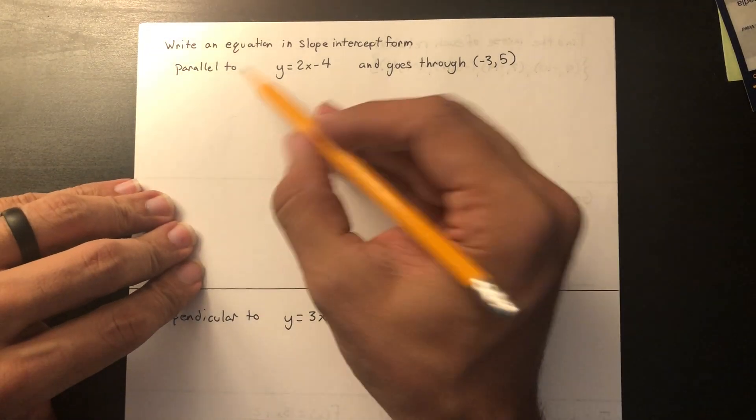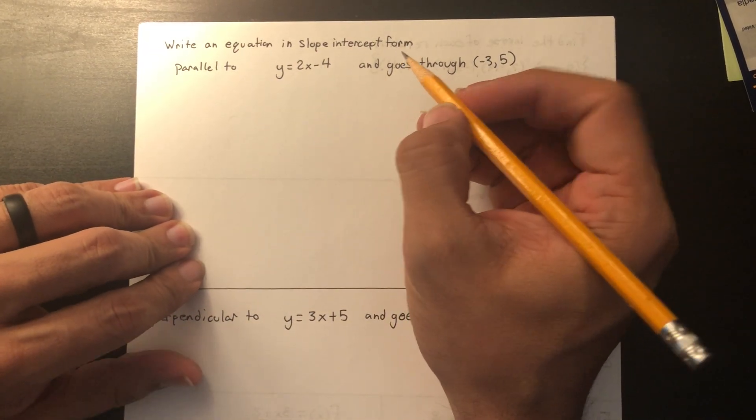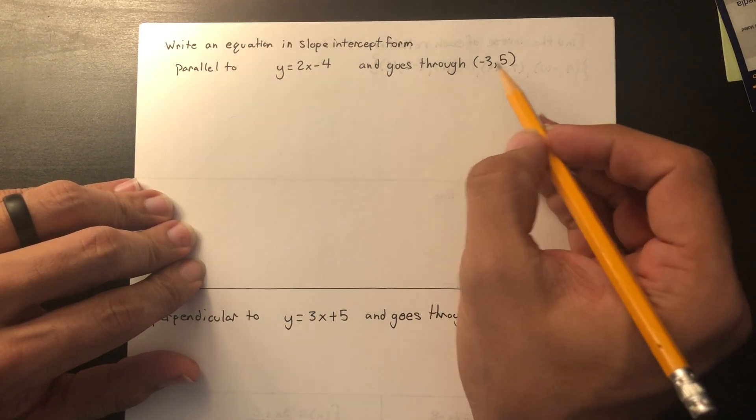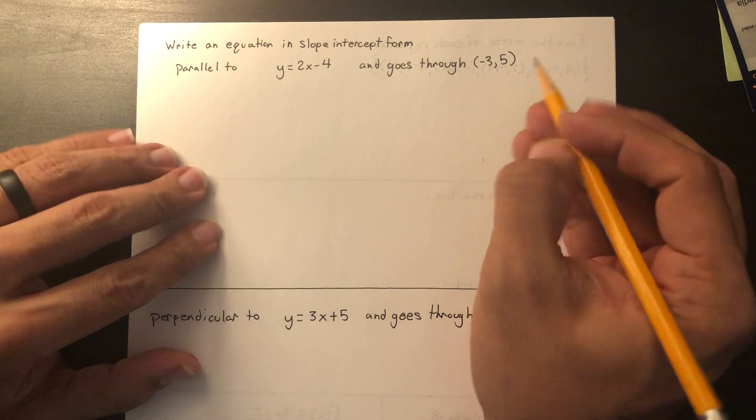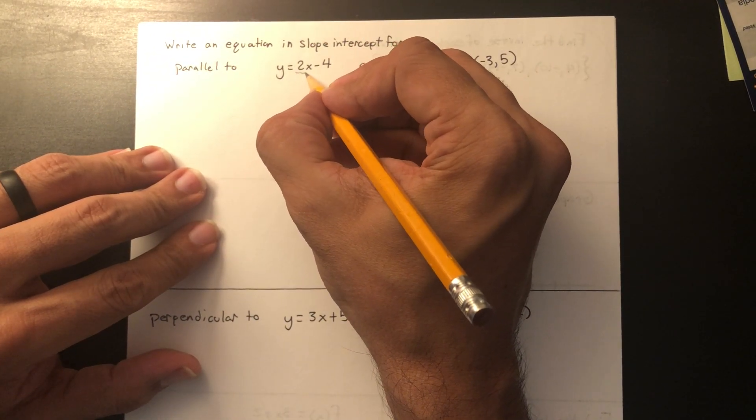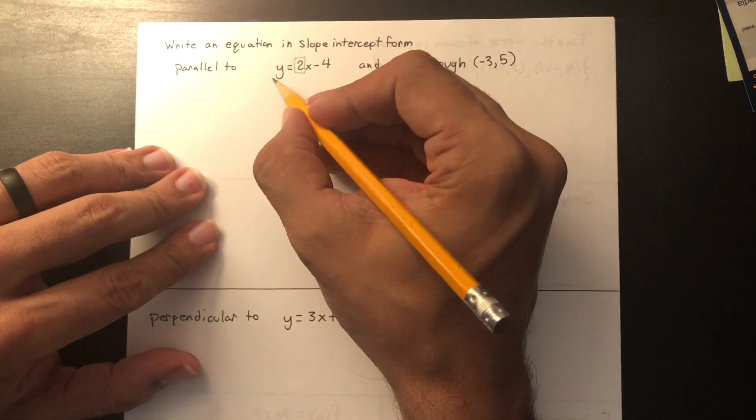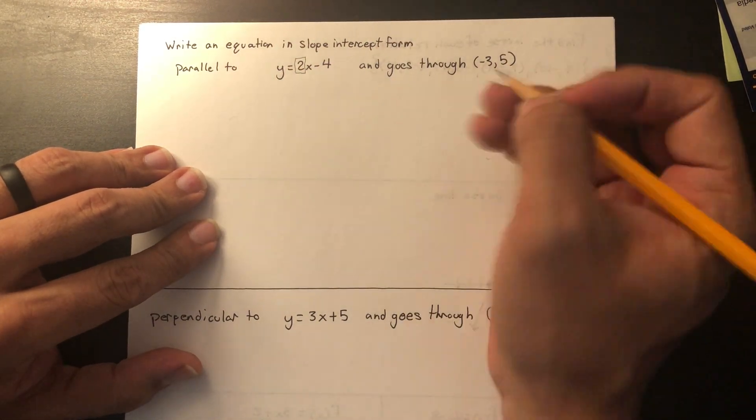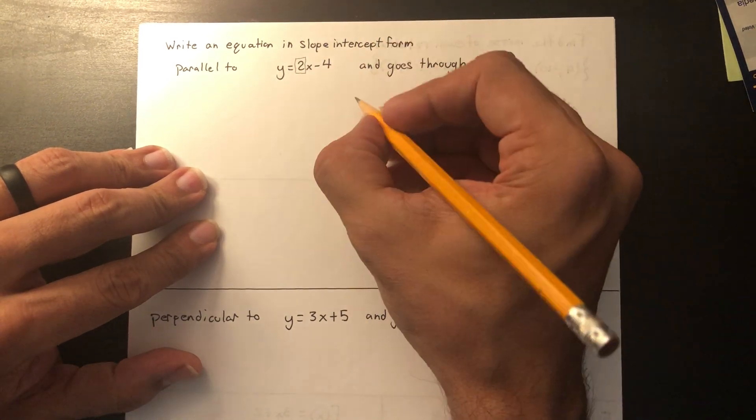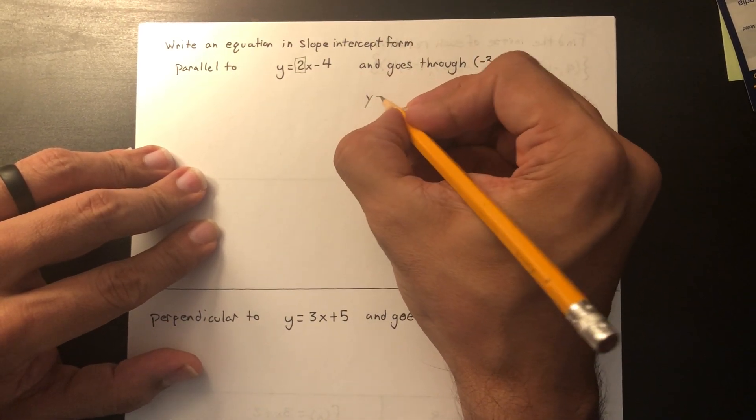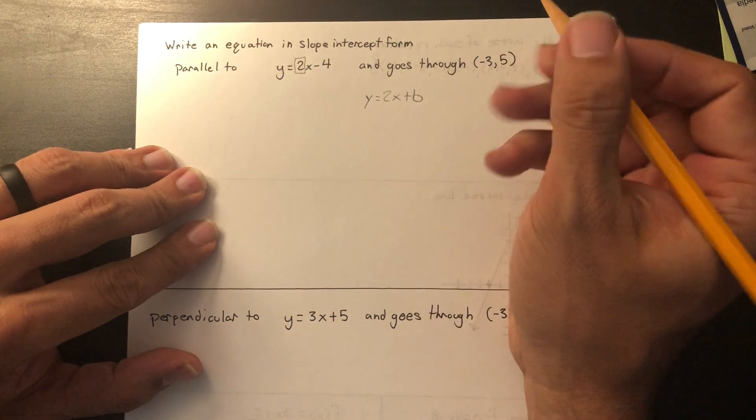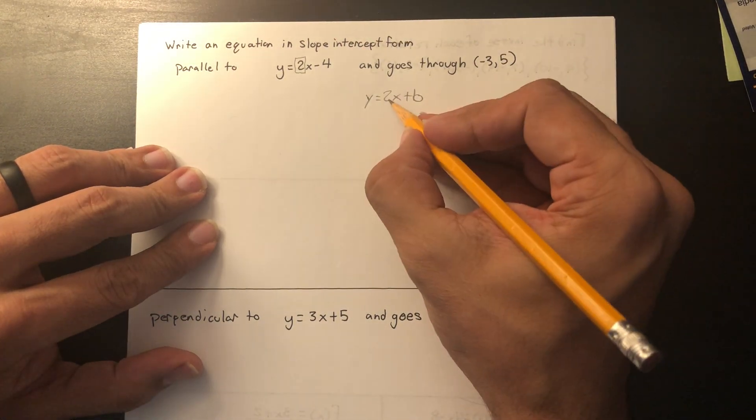We're going to write an equation in slope-intercept form that is parallel to this and goes through negative 3, 5. Parallel to this means that we're going to be using this slope. Two lines are parallel if they have the same slope, so we're going to make sure that our new equation has that slope.